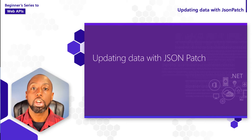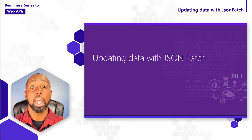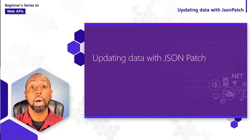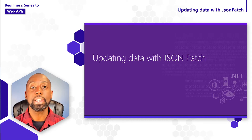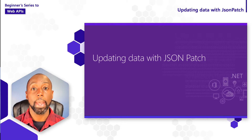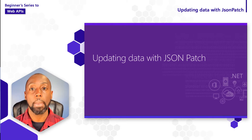By convention, there are two HTTP methods that are used whenever we're updating resources, and those are called PUT and PATCH. With PUT, updates are issued by replacing entire resources, but with PATCH, we can update individual properties inside of a given resource.